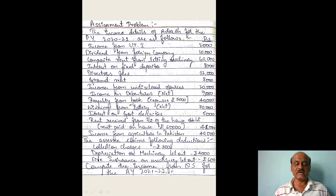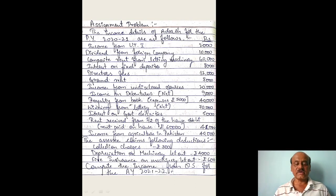Then royalty from books: expenses are Rs. 5,000, royalty income Rs. 40,000. Income from UTI Rs. 9,000 (gross up: 9,000 × 100/90). Interest on government security Rs. 5,000.